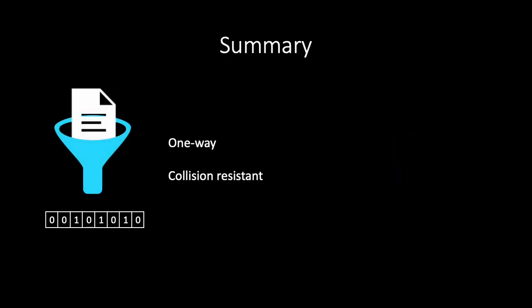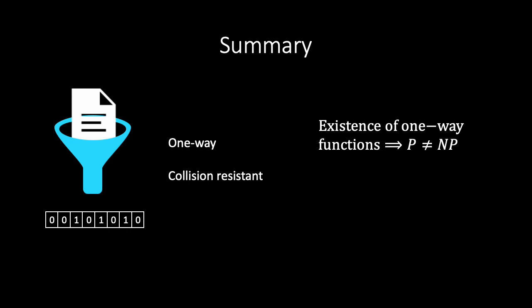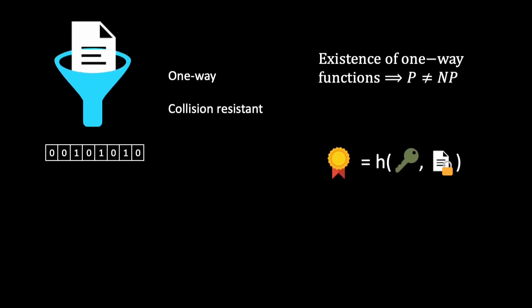Let us summarize what we have learned in this video. We have seen that cryptographic hash functions should be easy to compute but hard to invert, and it should be difficult to find collisions. We have seen that the existence of one-way hash functions would entail that P is not equal to NP. Finally, we have learned how hash functions are used for message authentication codes.